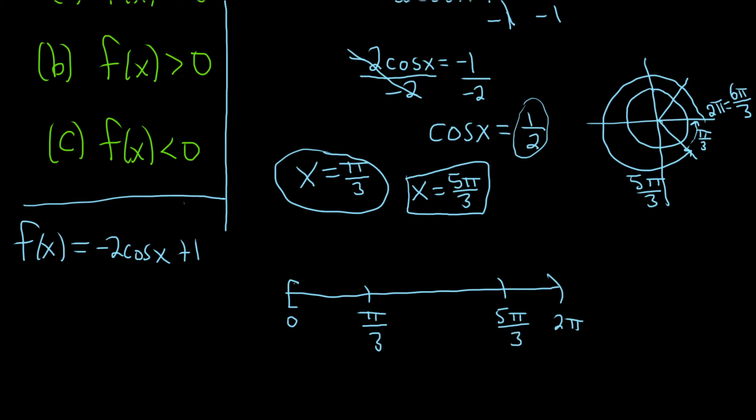Then, you just pick test points. You can pick any number you like. And then, you just figure out if it's positive or negative. So, for example, a nice number between 0 and pi over 3 would be pi over 4. That's smaller than pi over 3. So, let's plug it into our function. f of pi over 4 is equal to negative 2 cosine of pi over 4. And then, plus 1. So, that's negative 2 times the square root of 2 over 2 plus 1. So, that's negative square root of 2 plus 1. That's negative because the square root of 2 is bigger than 1. So, this is going to be negative.